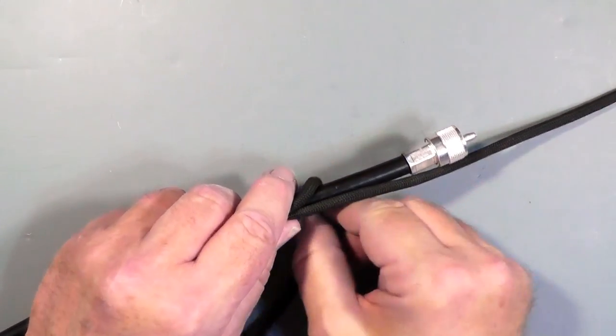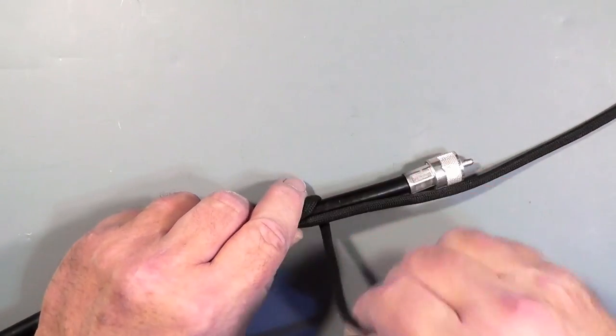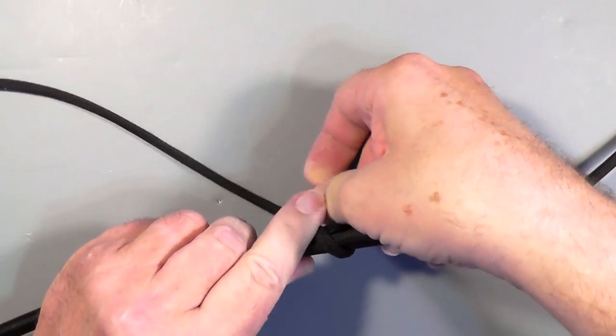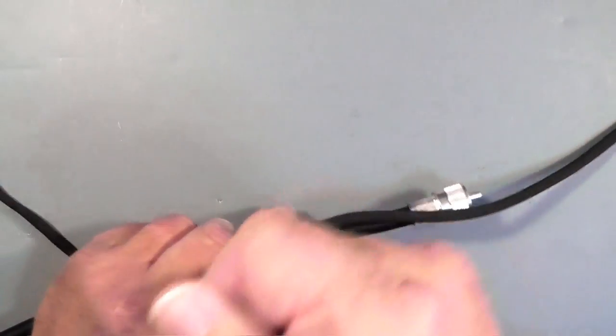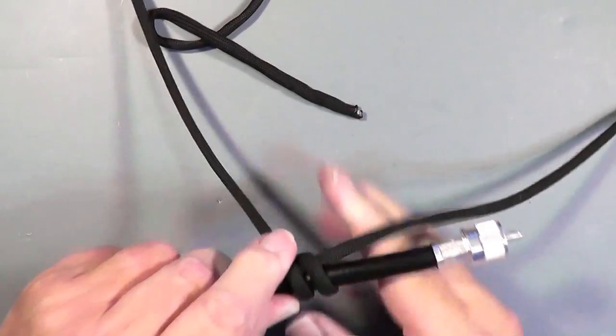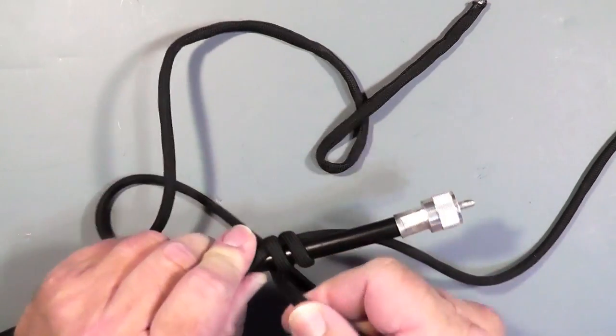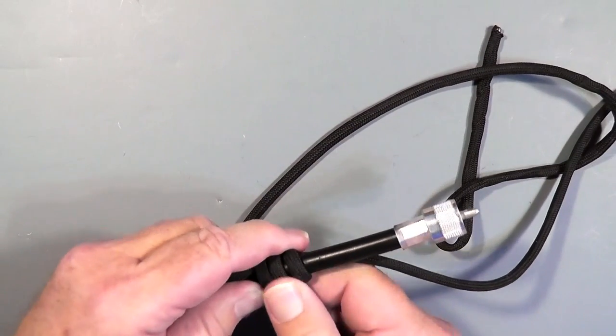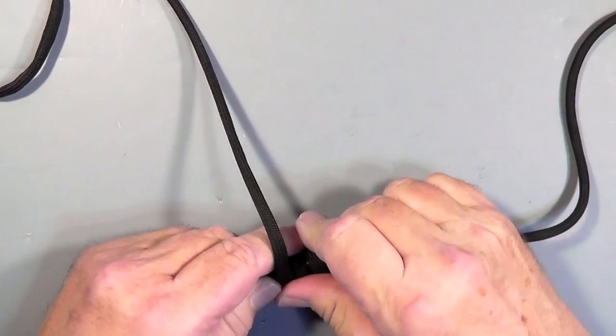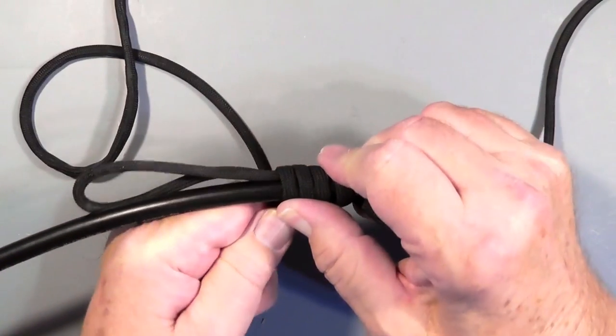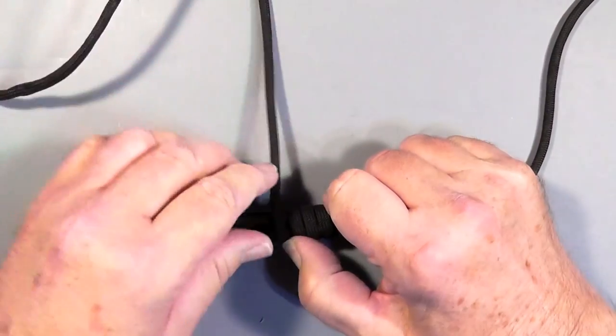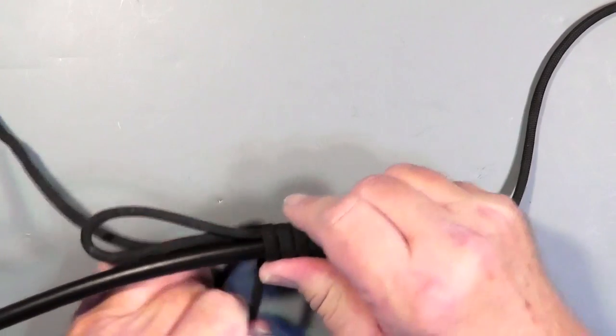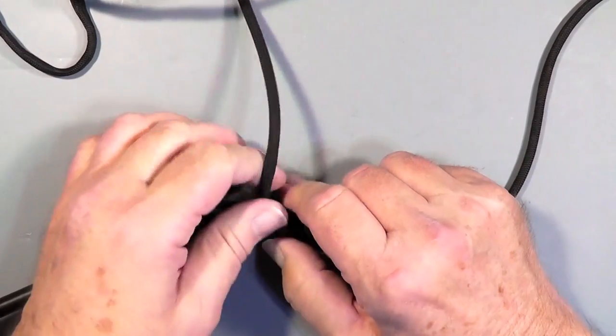Now what we're going to do is take one end of that, this end over here is the one that's going to go up to wherever the strain relief is from. So this end what we're going to do is pull it over and come in next to it there. We're going to just pull this tight as we go and ideally they should be right next to each other.